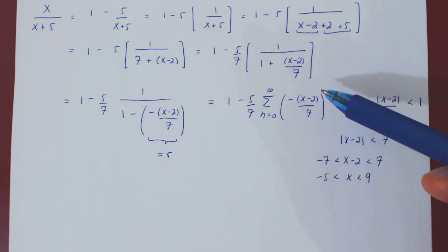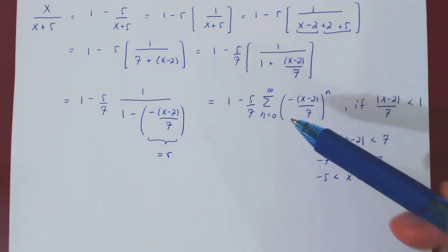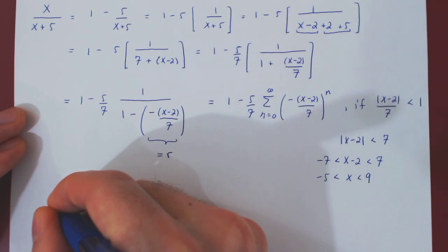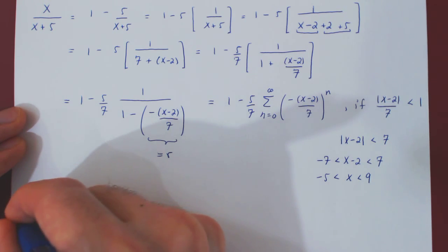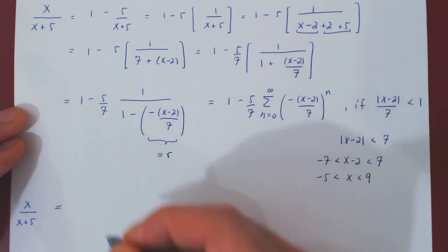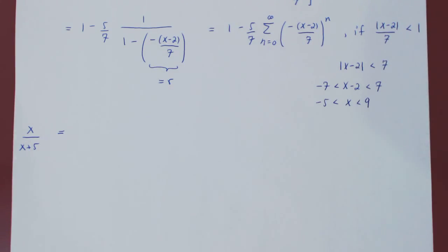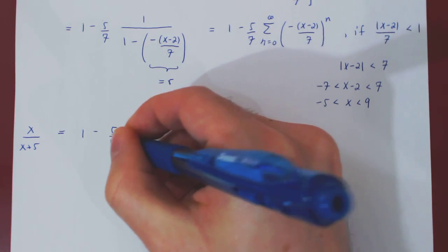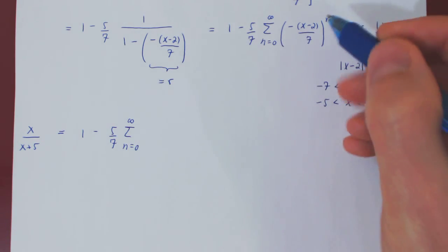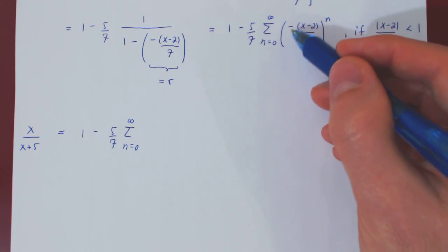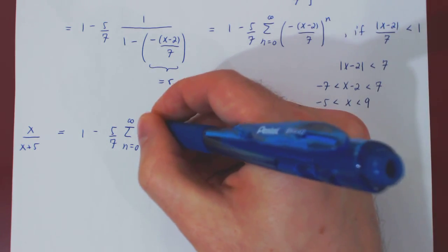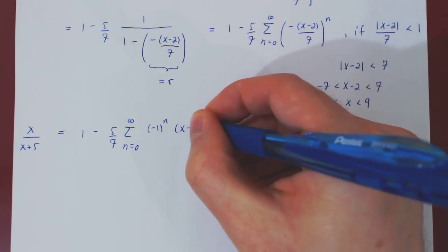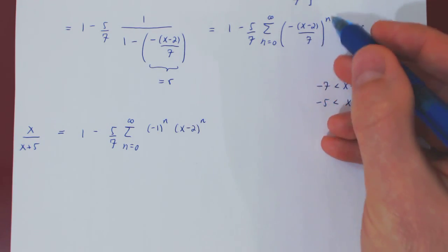This is the Taylor series of the function centered at 2. Let's simplify and clean this up. We have 1 minus 5 over 7, and here we'll split up the nth power on all three parts. We have a negative 1 to the n, times x minus 2 to the n, over 7 to the n.